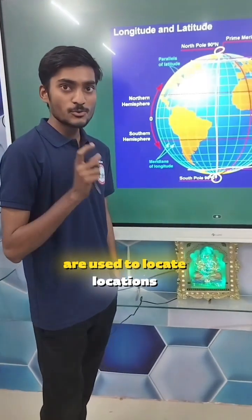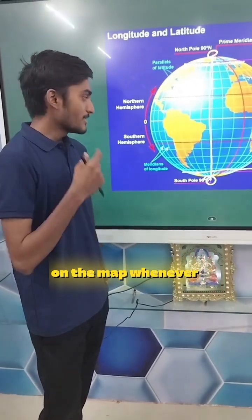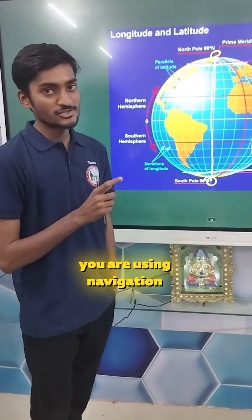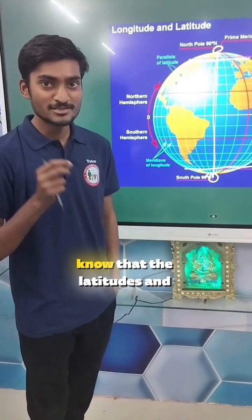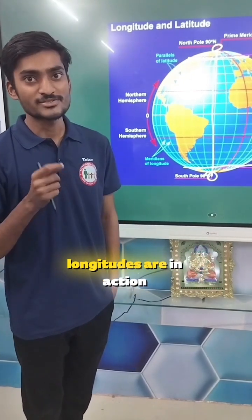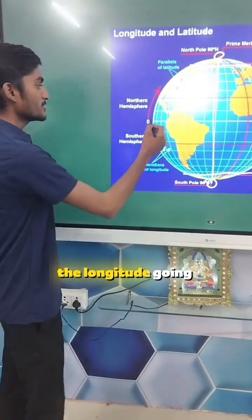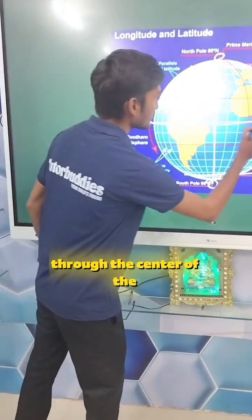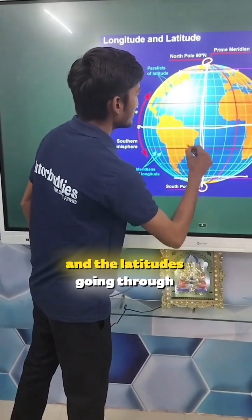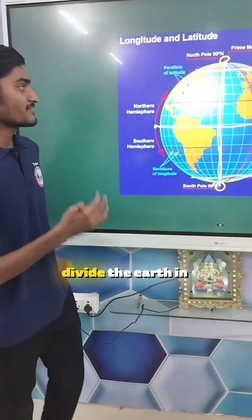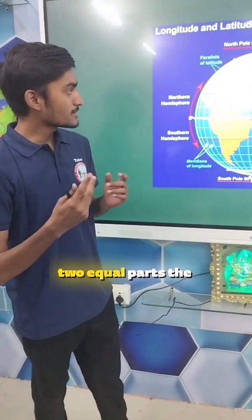These lines are used to locate locations on the map. Whenever you are using navigation on local maps, know that the latitudes and longitudes are in action. The longitudes and the latitudes going through the center of the earth divide the earth into two equal parts.